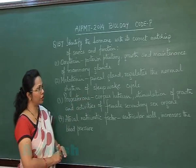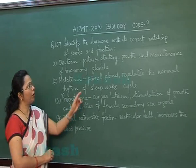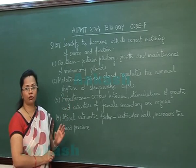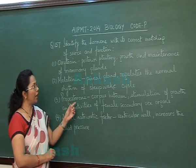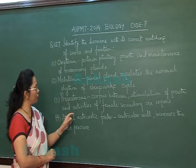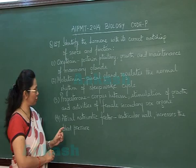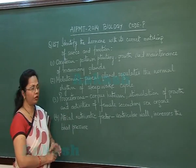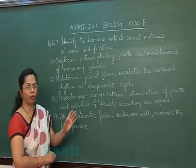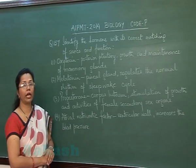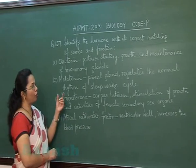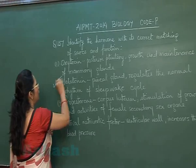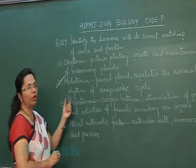Progesterone is secreted by the corpus luteum, but stimulation of growth and activities of female secondary sex organs is a feature of estrogen, not progesterone. For atrial natriuretic factor, the source given is wrong — it comes from the atrial walls of the heart, not as stated. Therefore, the correct answer is melatonin from the pineal gland.